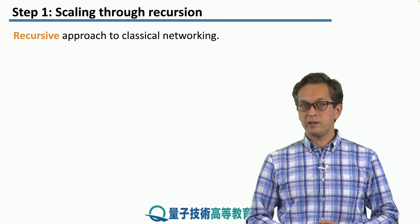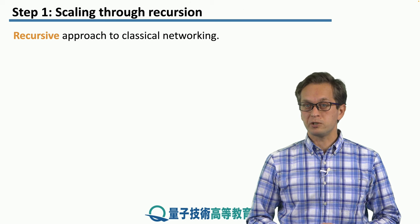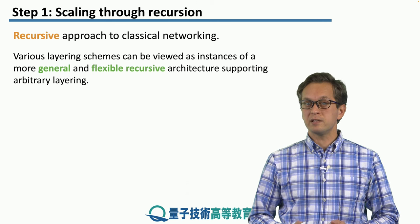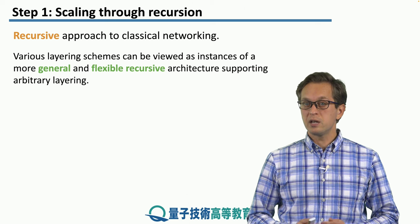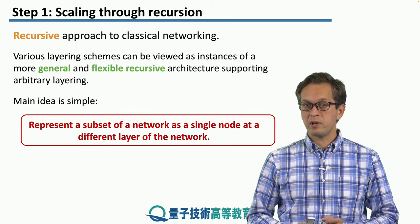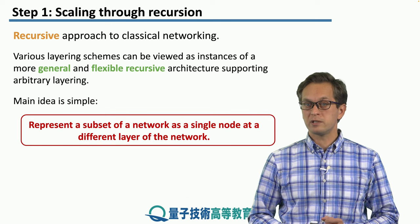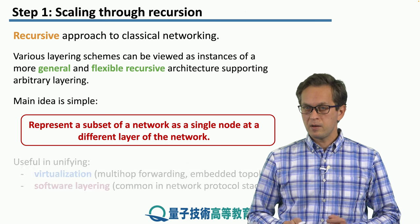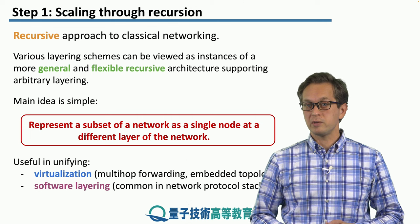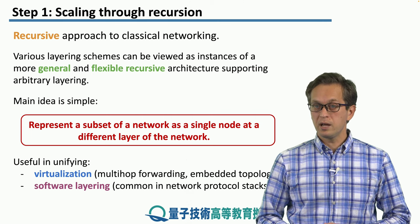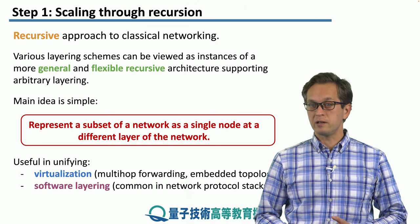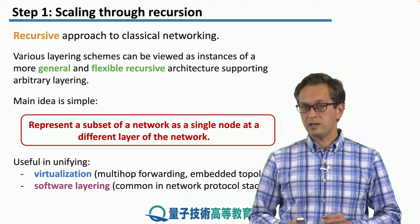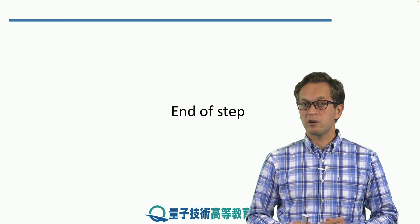One way out of this complicated picture is a recent proposal of using recursion — and in particular, the recursive approach to classical networking. Various layering schemes can be viewed as instances of a more general and flexible recursive architecture, supporting arbitrary layering. The main simple idea behind recursion in classical and quantum networks is that we can represent a subset of a network as a single node at a different layer of the network. This leads to very nice and unifying concepts such as virtualization, useful in multi-hop forwarding and embedding of topologies, as well as software layering, which is common in network protocol stacks. So for now, we only introduce the basic idea of recursion. In the next step, we're going to look more closely at what it means to use recursion in classical networks, before jumping onto recursion in quantum networks.